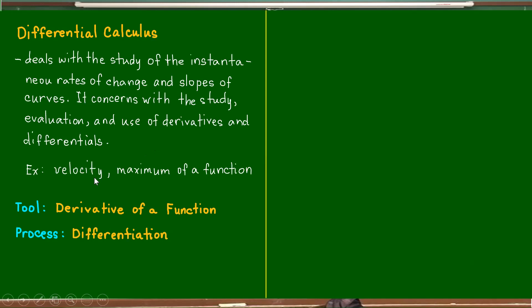In differential calculus, we can talk of velocity. In physics, when you discuss velocity, it is related to the derivative — in fact, instantaneous velocity is a derivative. A derivative can be a slope of the tangent line, or it can represent acceleration. So velocity, acceleration, and slope of tangent line are just specific names for the neutral name 'derivative,' which will be explained once we discuss the derivative of a function.